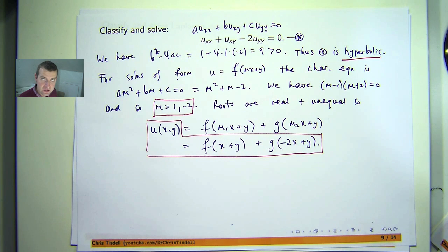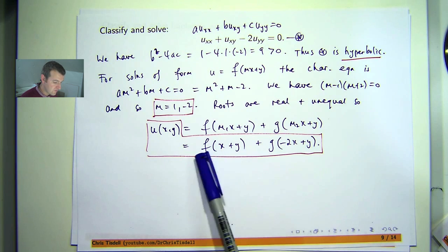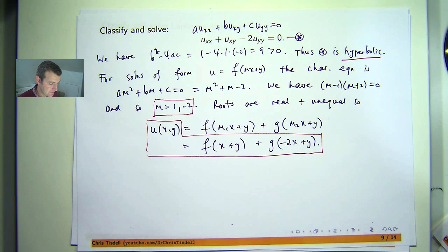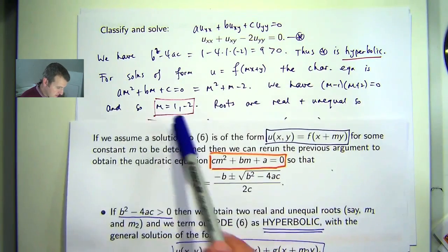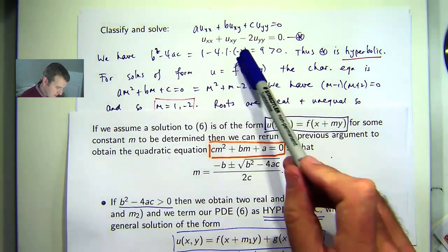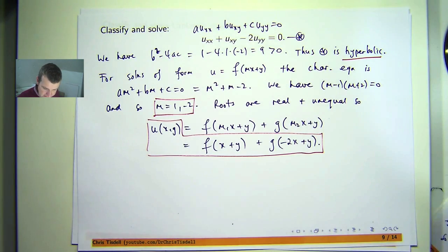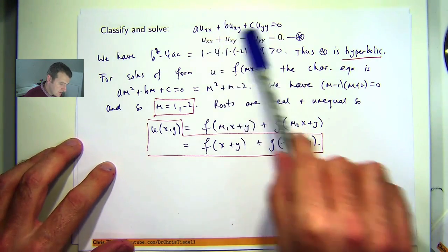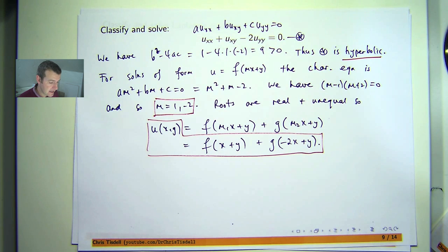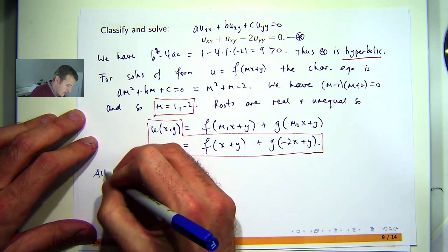So that's a general solution. Now usually with these kinds of problems, you have some initial conditions or some boundary conditions or a combination of both and you can refine your functions F and G. Well, if you decided to look for solutions in this form, you would have a slightly different characteristic equation. So instead of that, you would have negative 2M squared plus M plus 1 equals 0. And you would solve that.